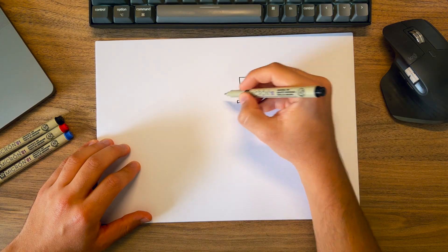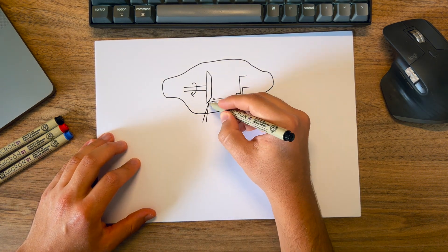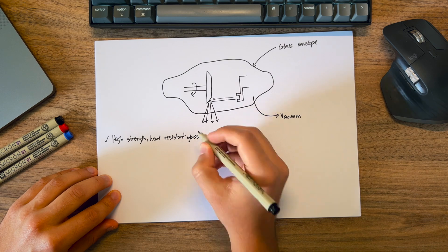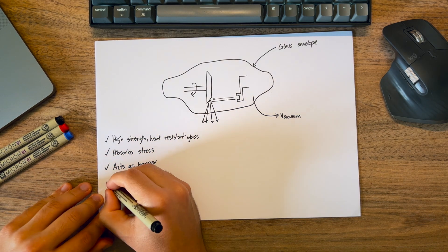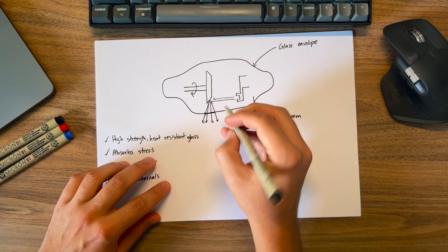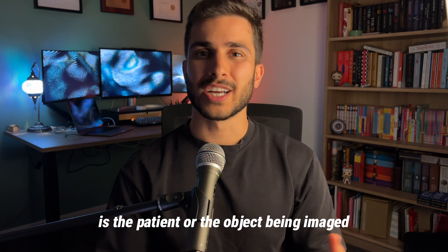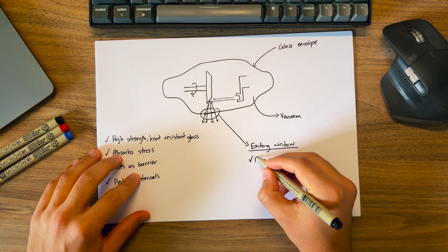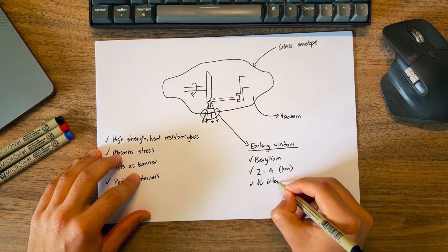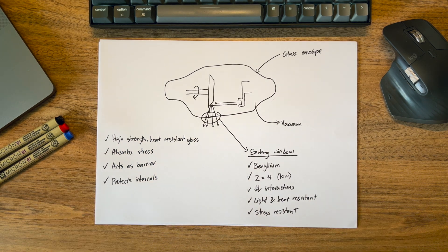All of this is encapsulated by a vacuum sealed glass container. It's this vacuum that allows the electrons to freely move from the cathode to anode without colliding with any air molecules, because if it did, it would cause them to scatter and interfere with the production of x-rays. This glass has to be made of a high strength heat resistant glass that can withstand the stresses inside, and it also acts as a barrier protecting the tube's internal components from contamination. At the bottom of the glass envelope is where you find the exiting window, which is designed to allow the generated x-rays to exit the tube with minimal absorption and scattering. Beryllium is a common material used for the exiting window because it has a low atomic number of 4, meaning fewer electrons and less absorption of x-rays, and it's also lightweight with a high melting point.